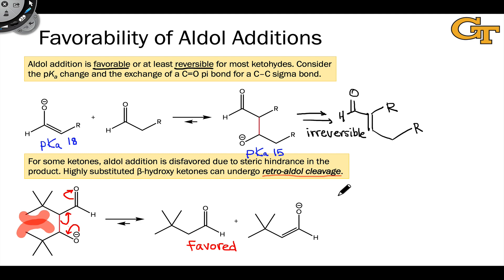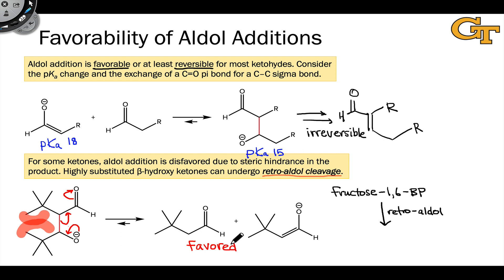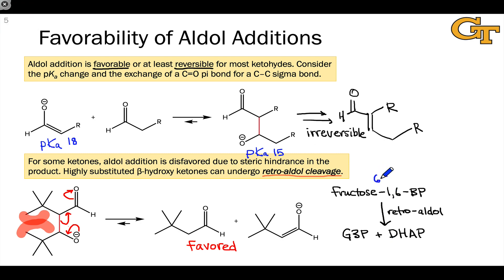Retro-aldol reactions also show up in biochemical contexts, and one of the most important occurs in glycolysis. The metabolite fructose 1,6-bisphosphate contains the beta-hydroxycarbonyl functionality needed for a retro-aldol reaction. The retro-aldol of this intermediate gives rise to two fragmented products: glyceraldehyde-3-phosphate and dihydroxyacetone phosphate. The purpose of this step is to convert a six-carbon fragment derived from glucose into two three-carbon fragments, each carried on through the remainder of glycolysis.